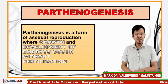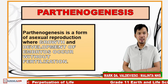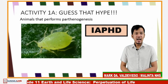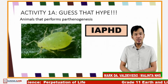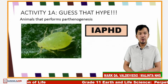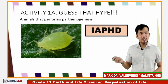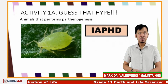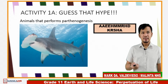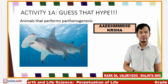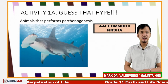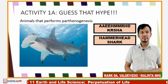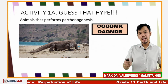Let's proceed to parthenogenesis. Parthenogenesis is a form of asexual reproduction where growth and development of embryos occur without fertilization. For activity one, I call this game Guess That Hype — rearrange the jumbled letters to reveal the hidden word, which are animals that perform parthenogenesis. Based on the picture, can you guess the animals? Correct — those are aphid, hammerhead shark, and Komodo dragon.